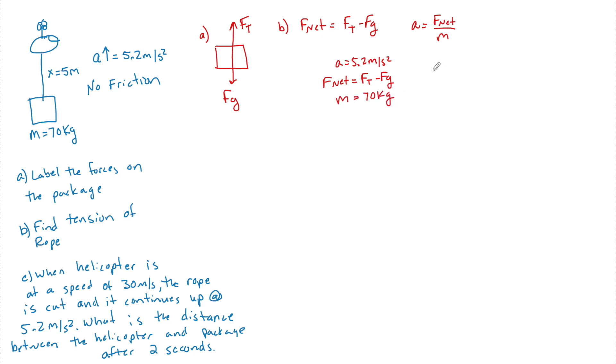So when I substitute in, I get 5.2 meters per second squared equals F net over the total mass. I'm going to use 10 meters per second squared.